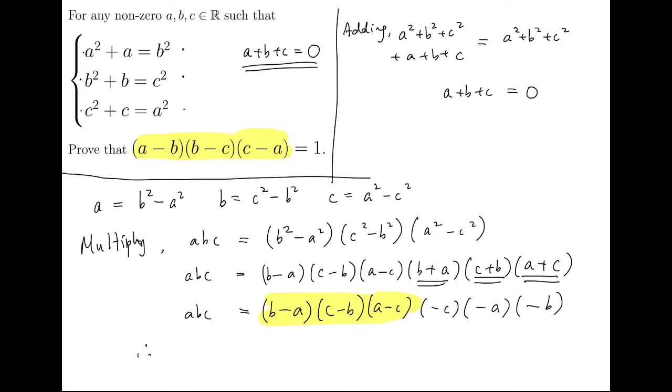Now we can cancel the abc. And so, we'll get minus one to the power of three times the highlighted terms is one.